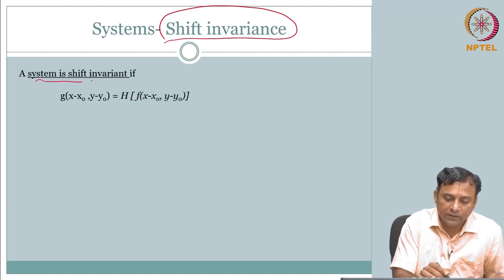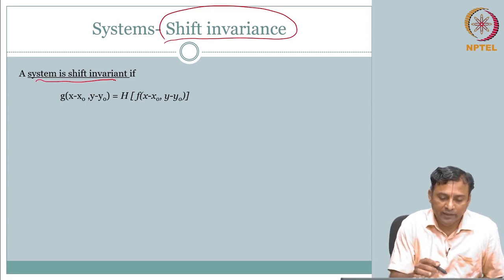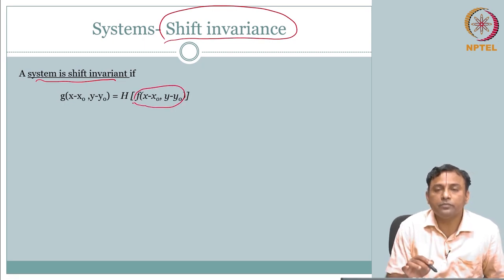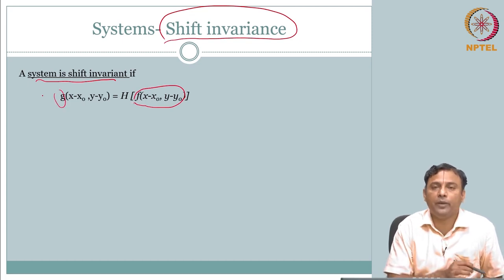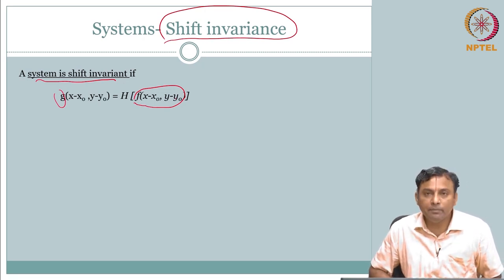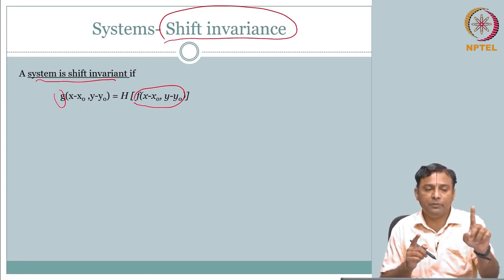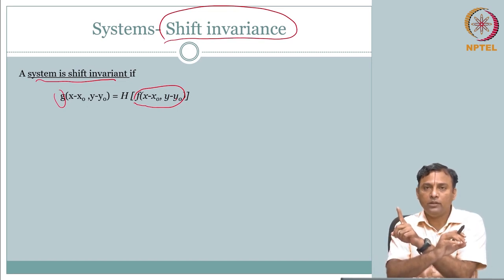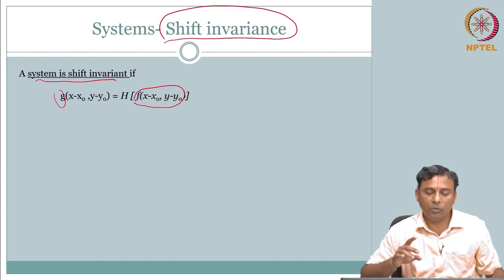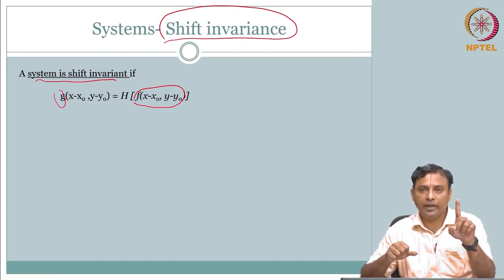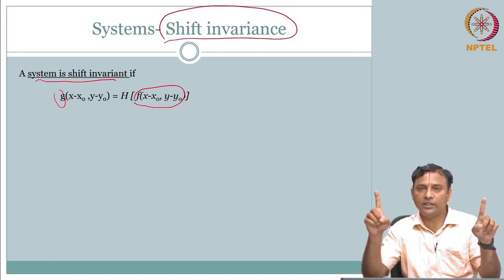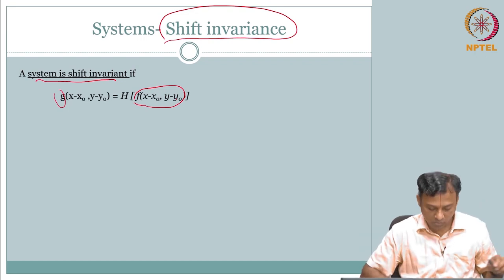If the system is shift invariant, here is what happens: if f(x,y) gives output g(x,y), then presenting f(x-x₀, y-y₀) - a shifted version of the input - gives output g(x-x₀, y-y₀). If you shift the input and present it through the system, the output moves exactly the same way. It does not matter how you arrived there - if you shift the input by x₀ and y₀, the output shifts by the same amount.